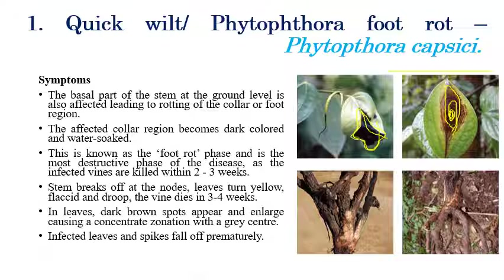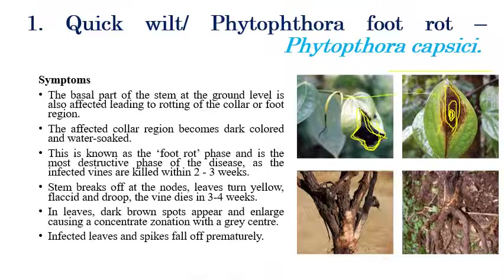The tips completely die and turn black — a firing symptom can be observed. Later, infected leaves and spikes fall, and premature defoliation of leaves can be observed in later stages.